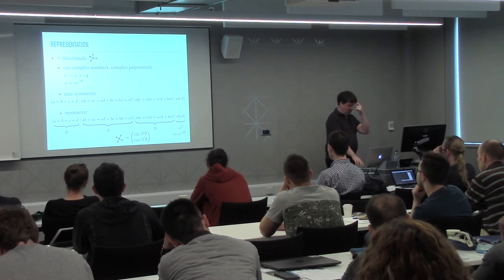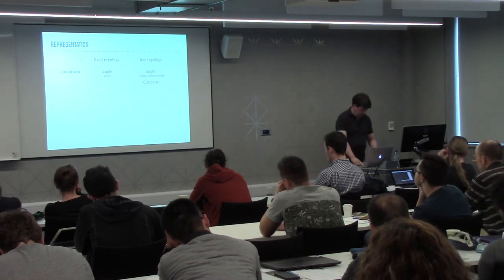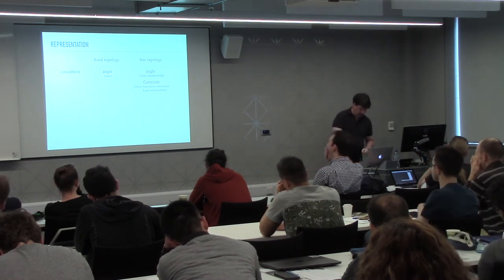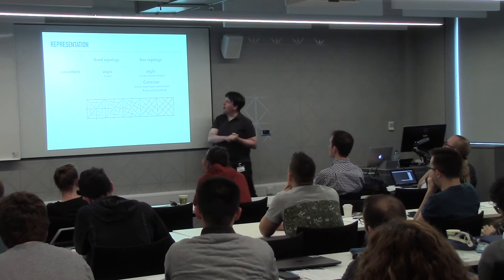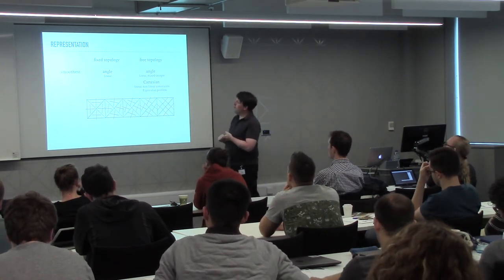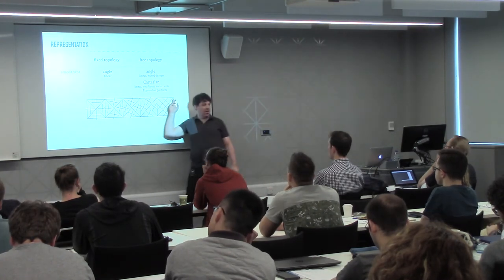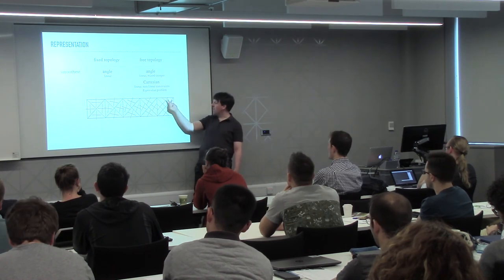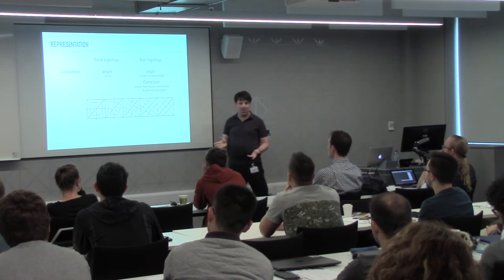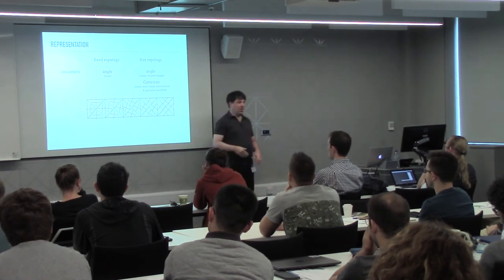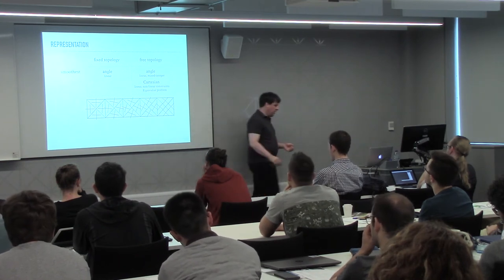We keep going back and forth between liking and not liking Cartesian methods. We encode a magnitude here — it's a degree of freedom you can use or not, but it's causing trouble, as you will see.